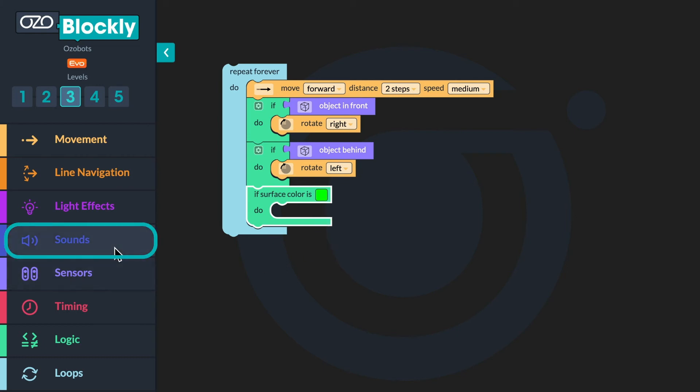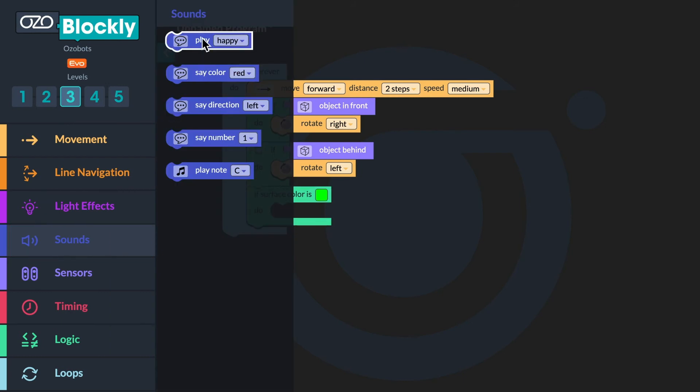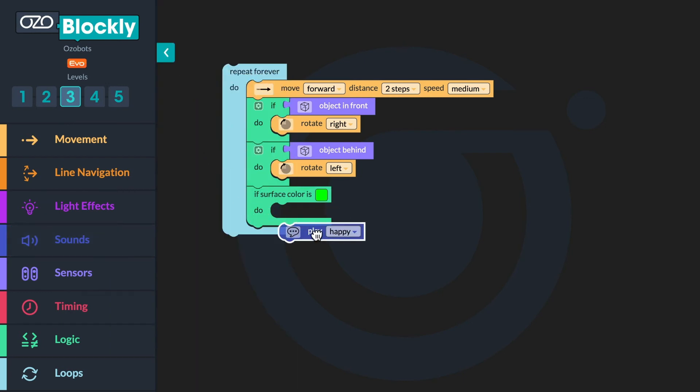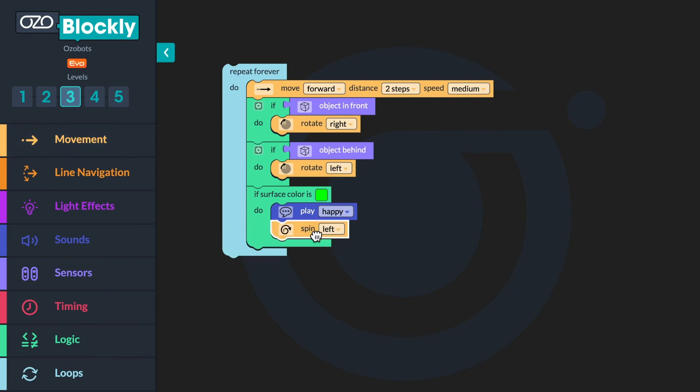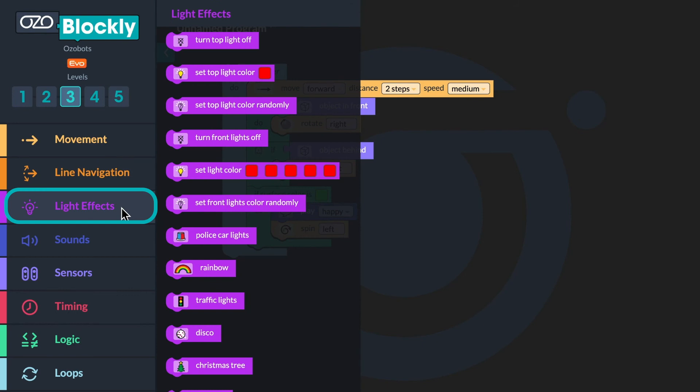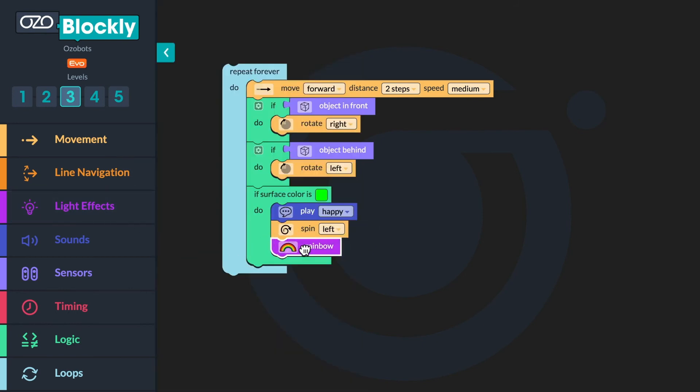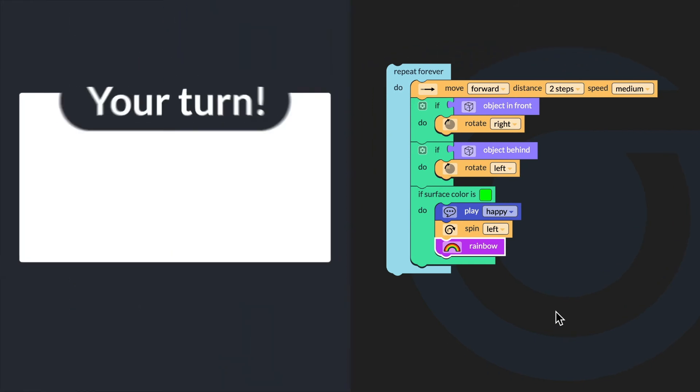Next, go to Sounds. Click and drag a Play Happy Block inside the conditional after the word Do. Now go to Movement. Choose a Spin Left Block and drag it below the Play Happy Block. Finally, go to Light Effects. Choose a Light Effect Block and drag it below the Spin Left Block. Can you use code to program your bot to celebrate when it reaches the finish line?